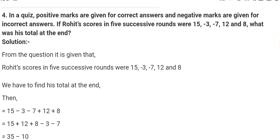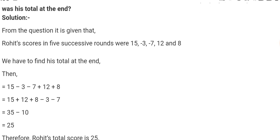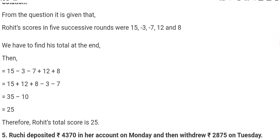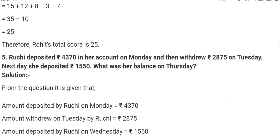If Rohit scores in 5 successive rounds were 15, minus 3, minus 7, 12, and 8, what was his total at the end? So you have to write positive marks and negative marks. We will get negative marks. You can see that the answer will be 25. So the total score is 25.